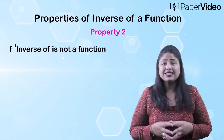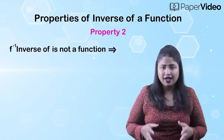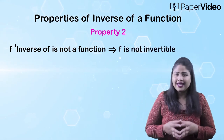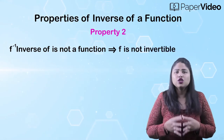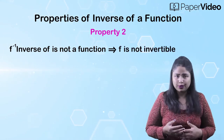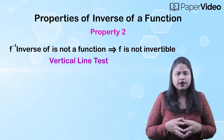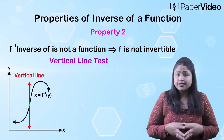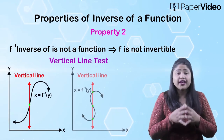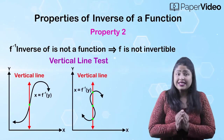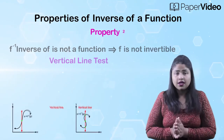According to the second property, if f inverse is not a function, then f is not invertible. So we can use the vertical line test to verify whether f inverse is a function or not.